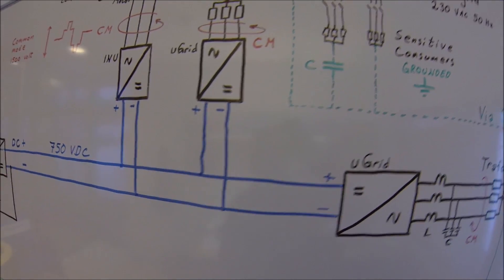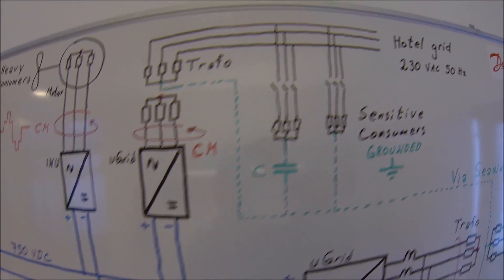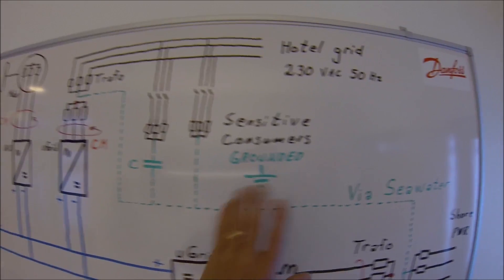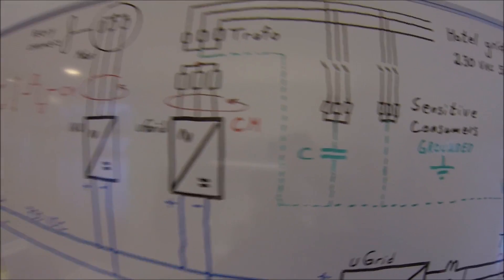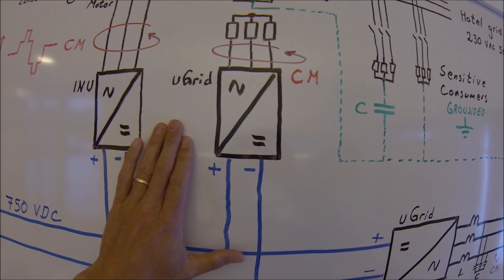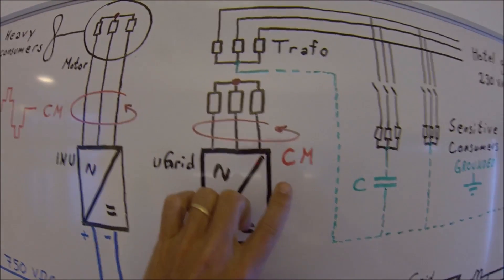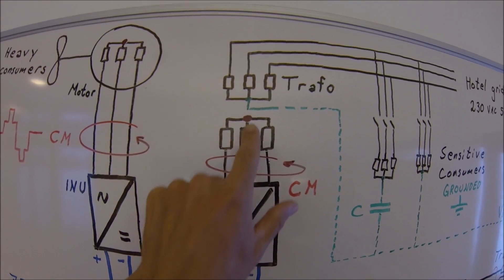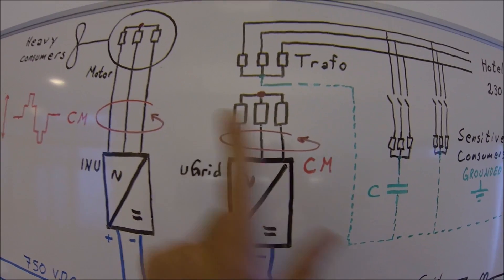If you look at how the AC for the hotel and for the bridge and all the sensitive consumers are produced, we have a grid converter with a transformer, isolating transformer, where the star point is allowed to rotate freely.